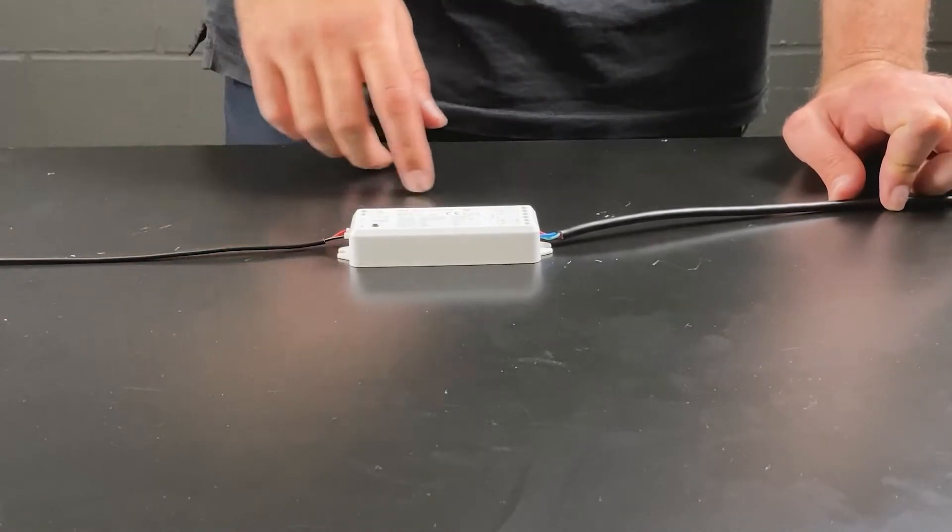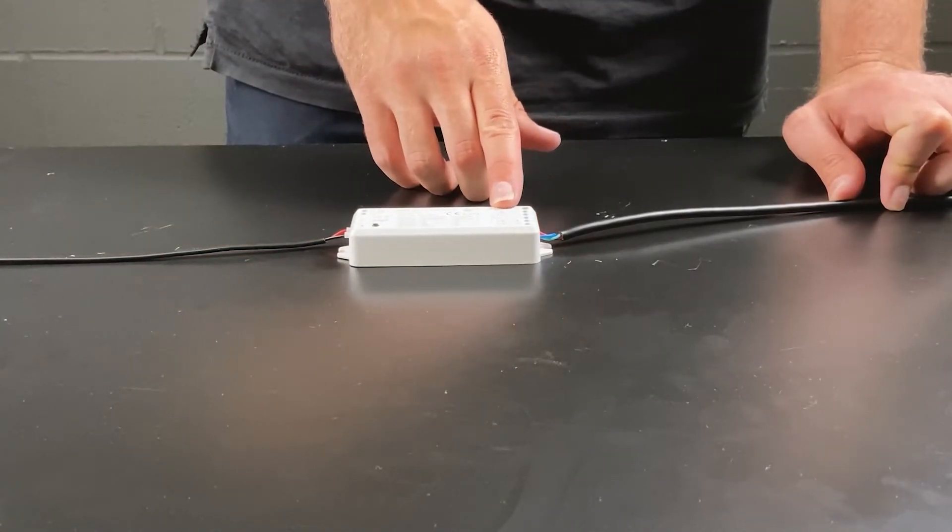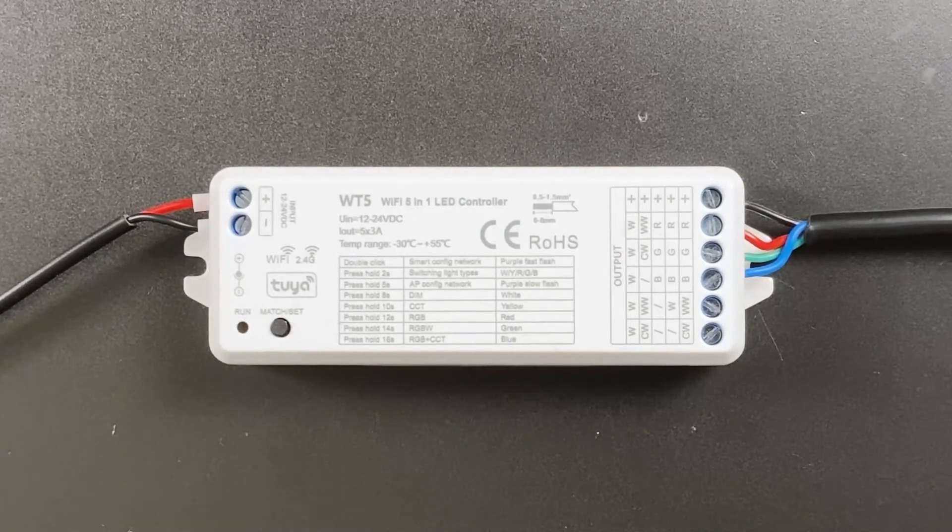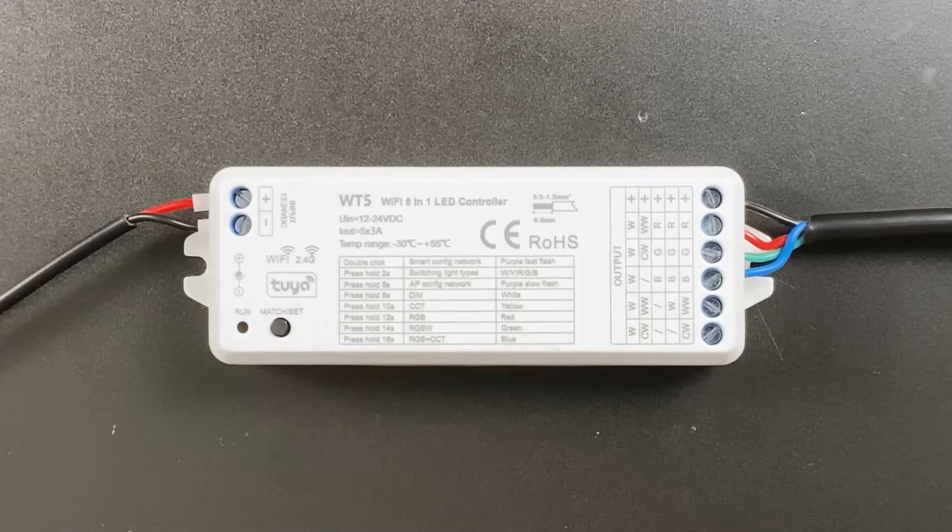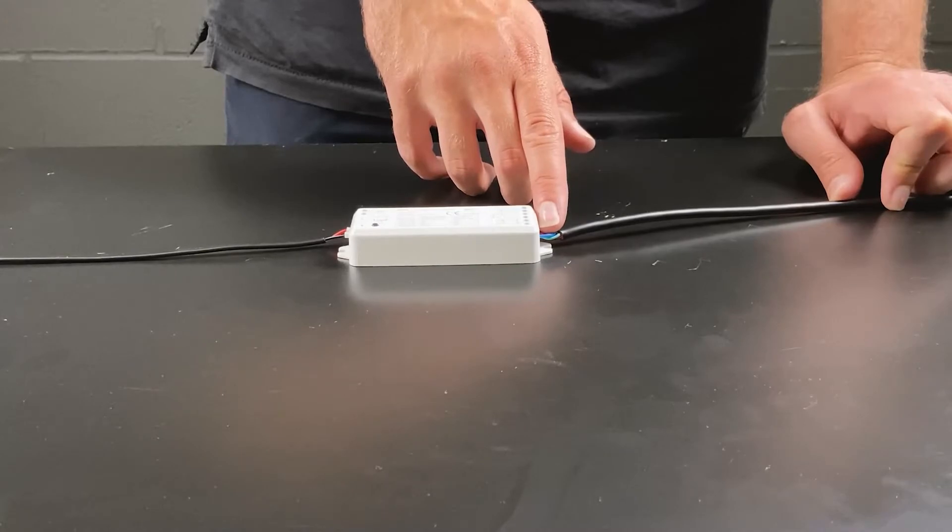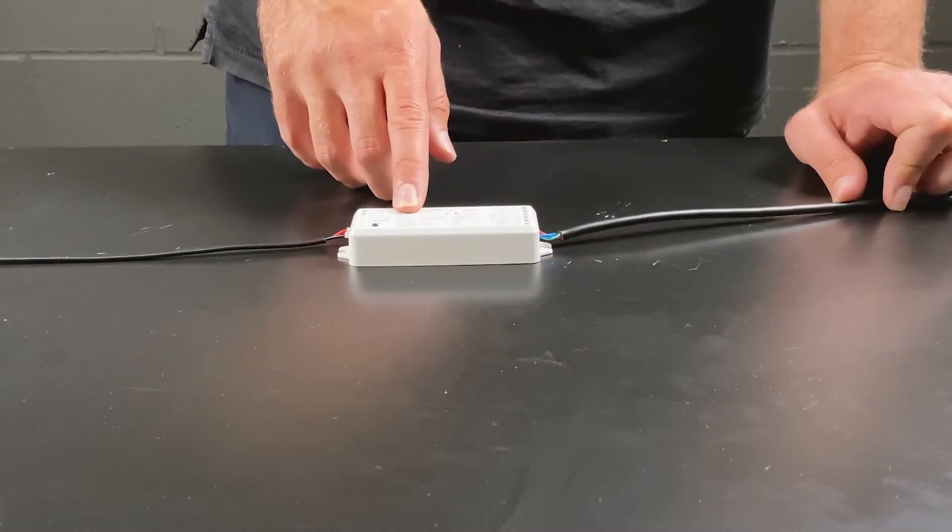For RGB tape the black wire will go into the positive terminal, red to the red terminal, green to the green terminal and blue to the blue terminal. This will allow you to color mix R, G and B to achieve your color selection.